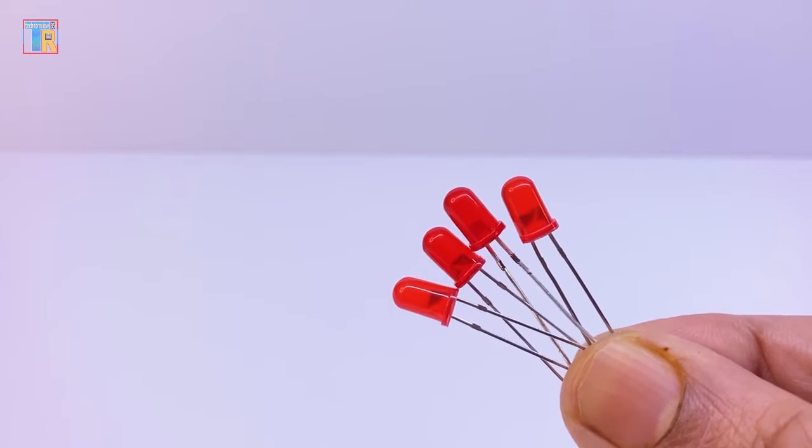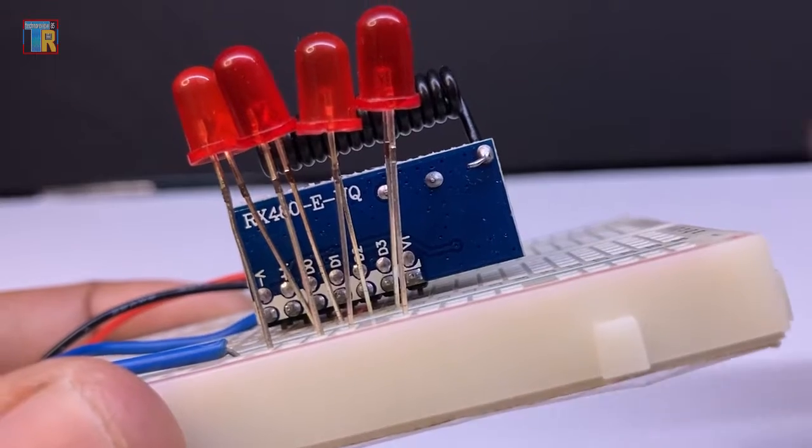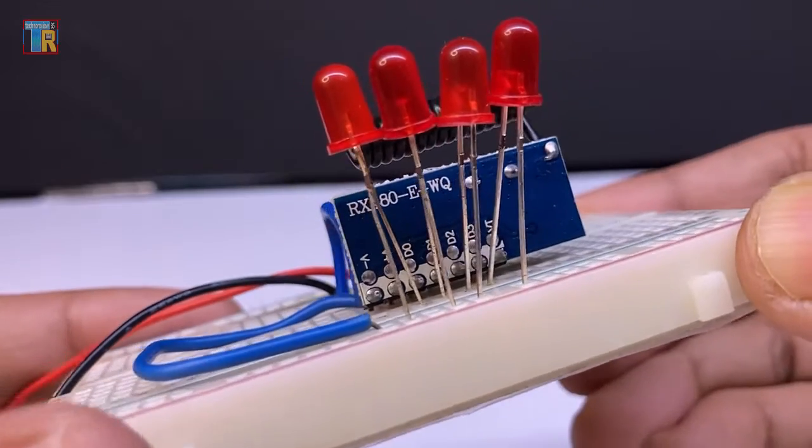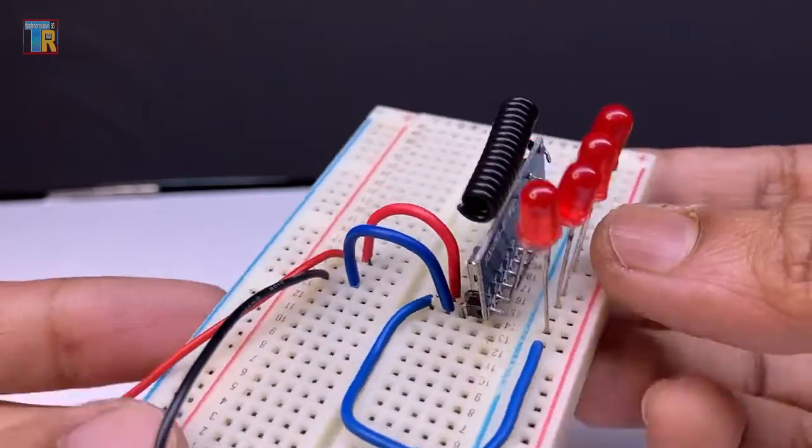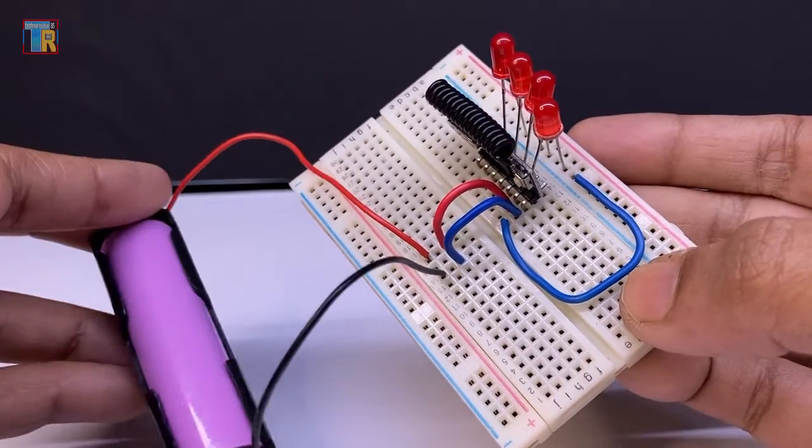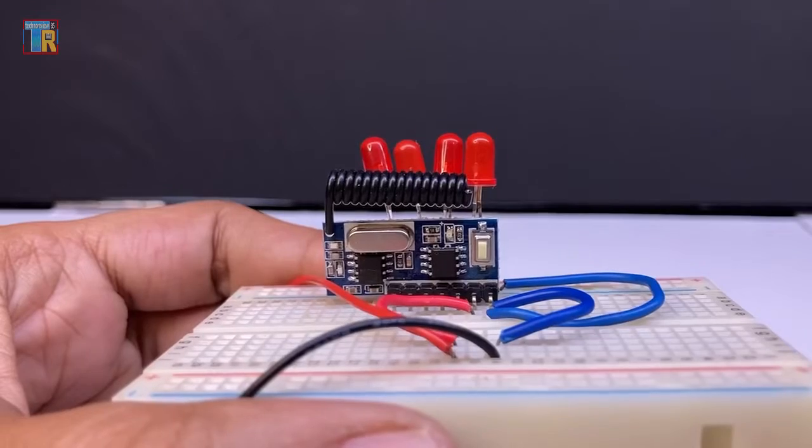The connection is very simple. Four LEDs are connected to pins d0 to d3. A 3.7 volt battery is connected to V plus and V minus. Before pairing any remote, I have to press the learning button eight times to reset any previous code.